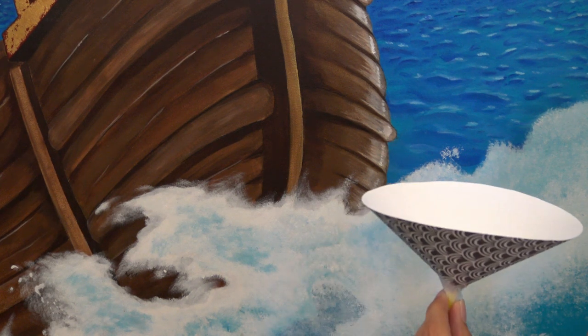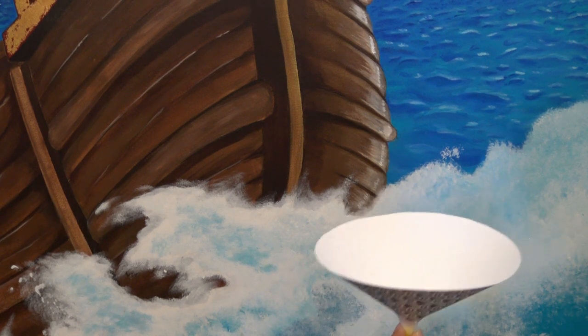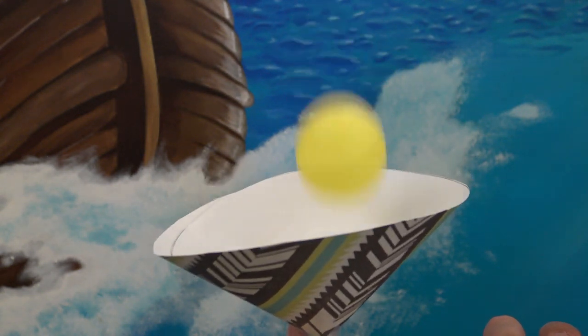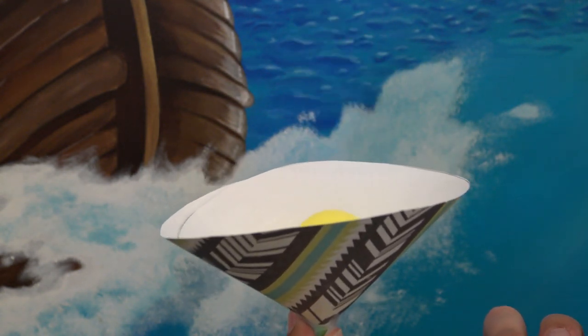Gravity pulls the ping pong ball downward, while the air blowing from below the ping pong ball forces it upward. When all the forces acting on the ping pong ball are balanced, it hovers in mid-air.